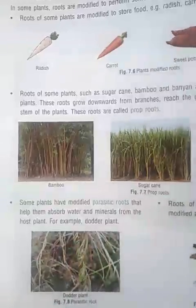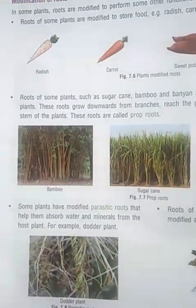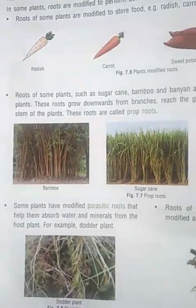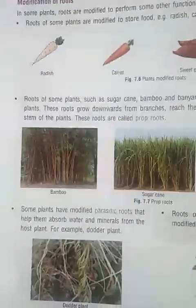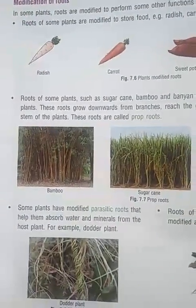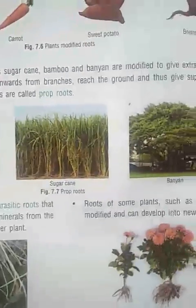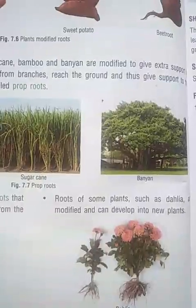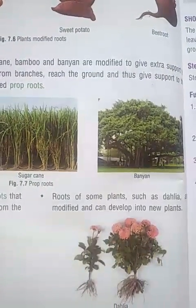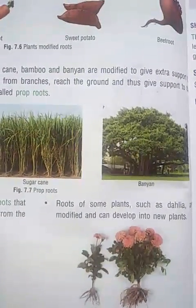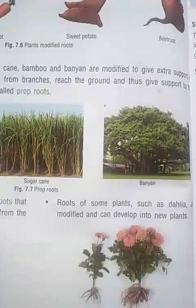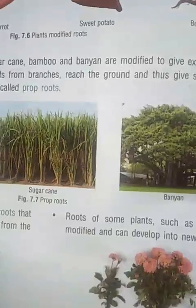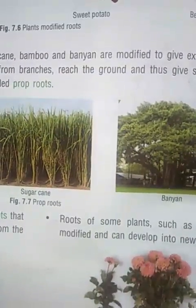Some plants have modified parasitic roots that help absorb water and minerals from the host plant body. Some roots of plants such as Dahlia are modified so they can develop into new plants. These roots can form new plants by themselves.